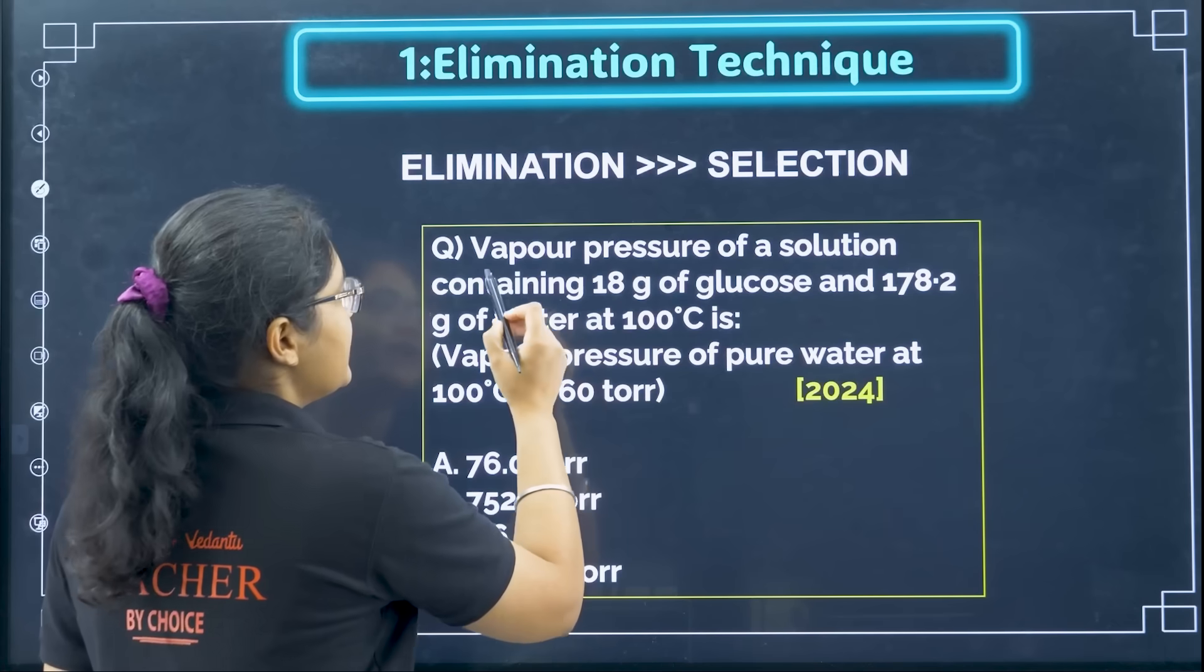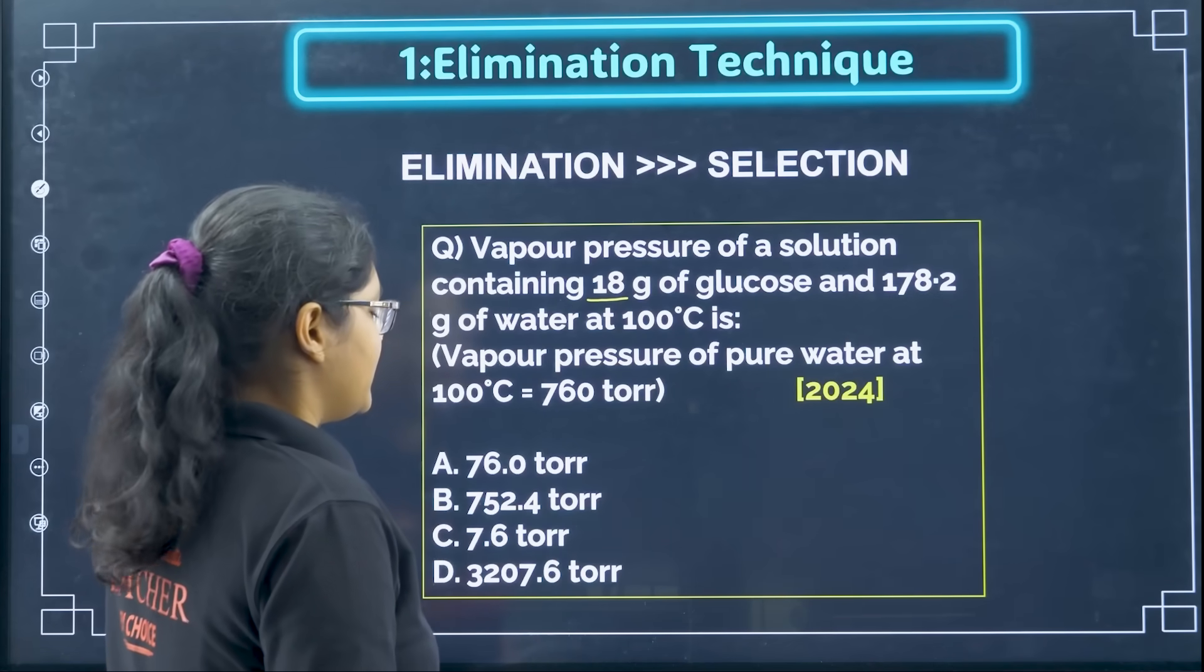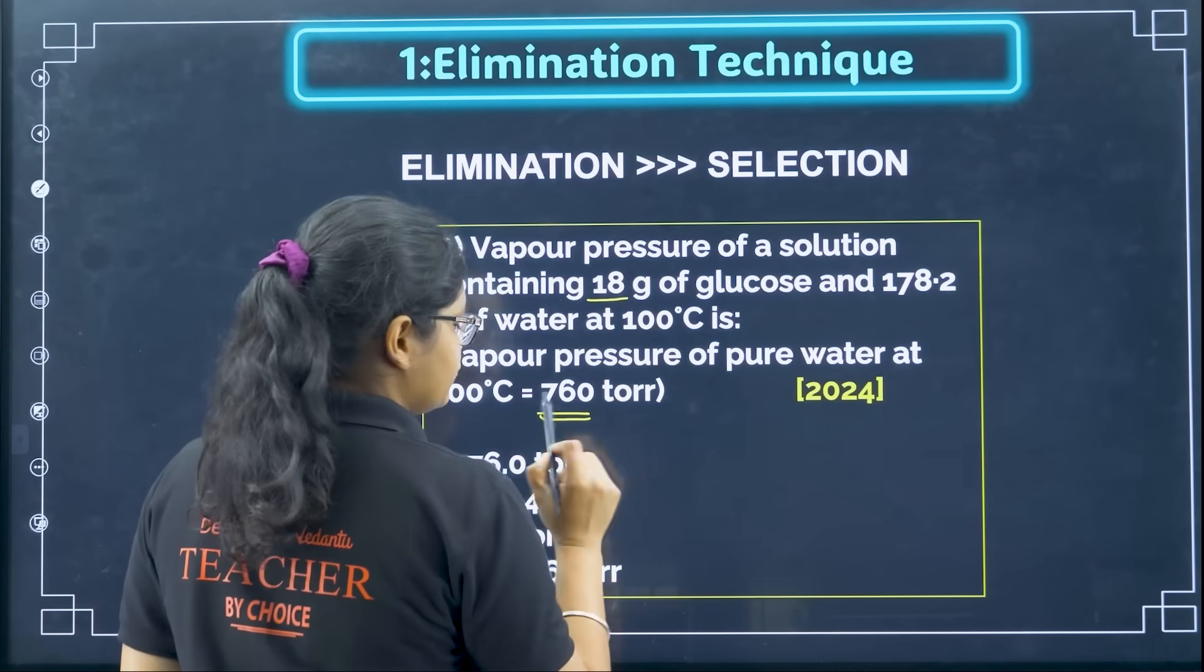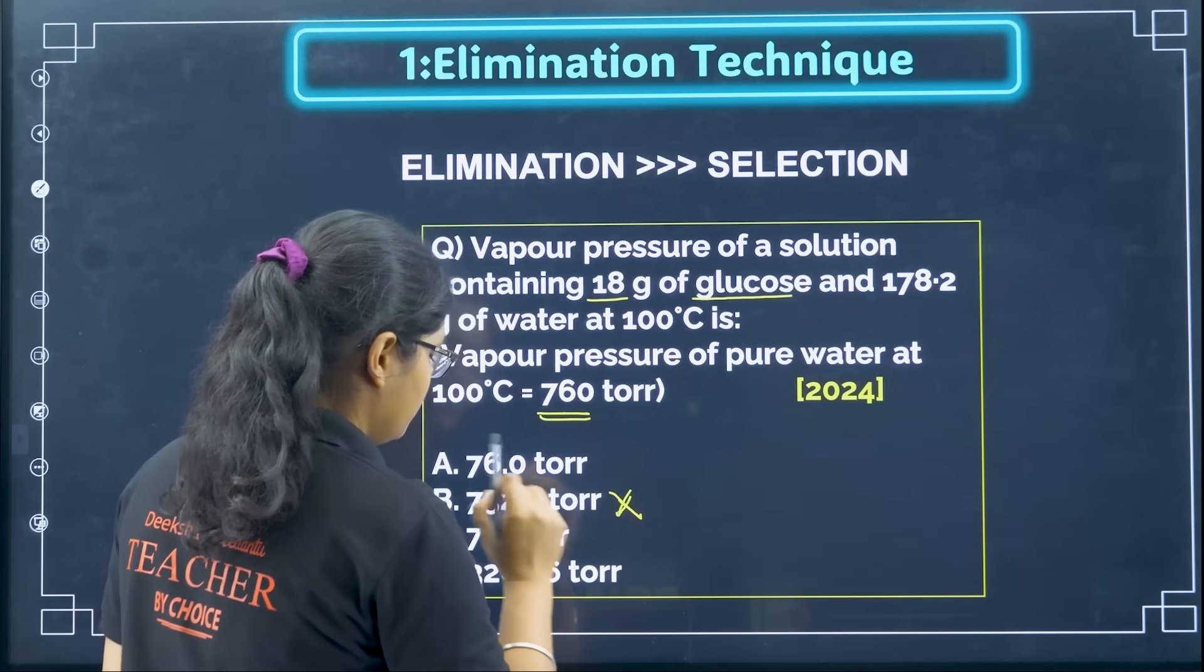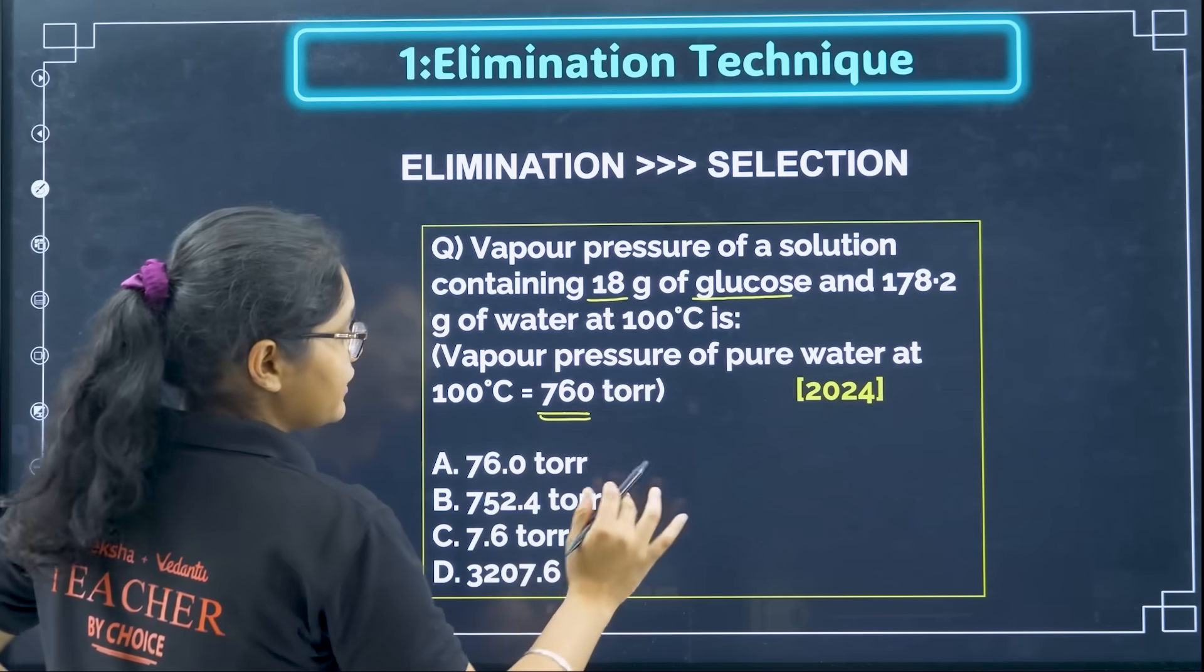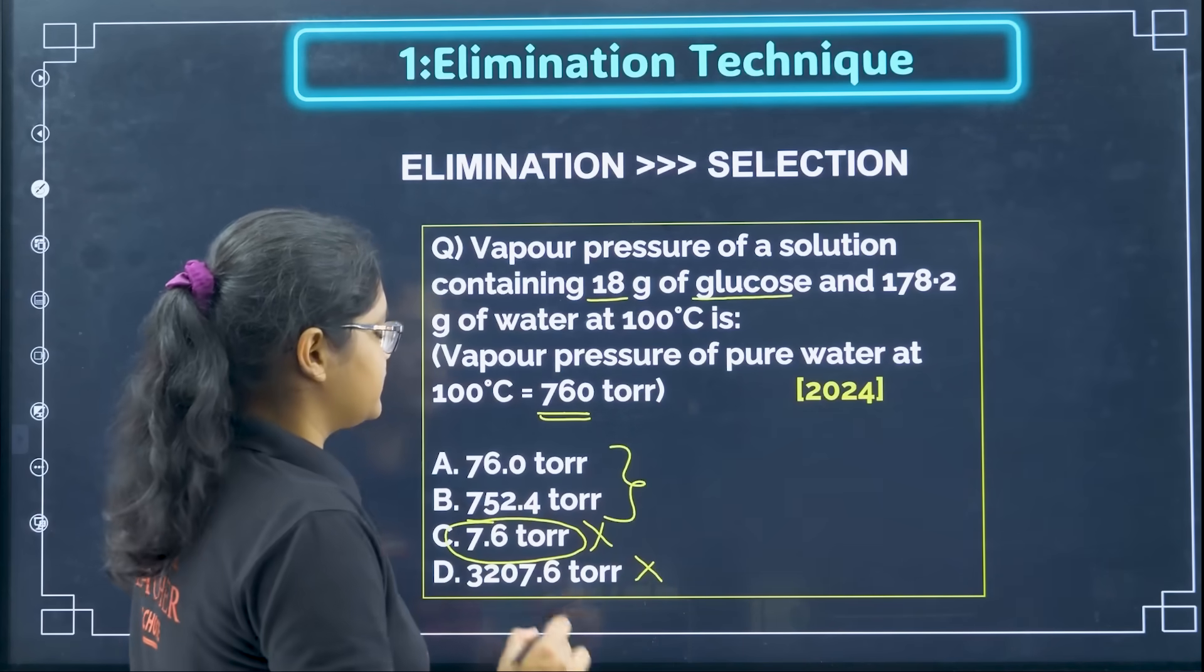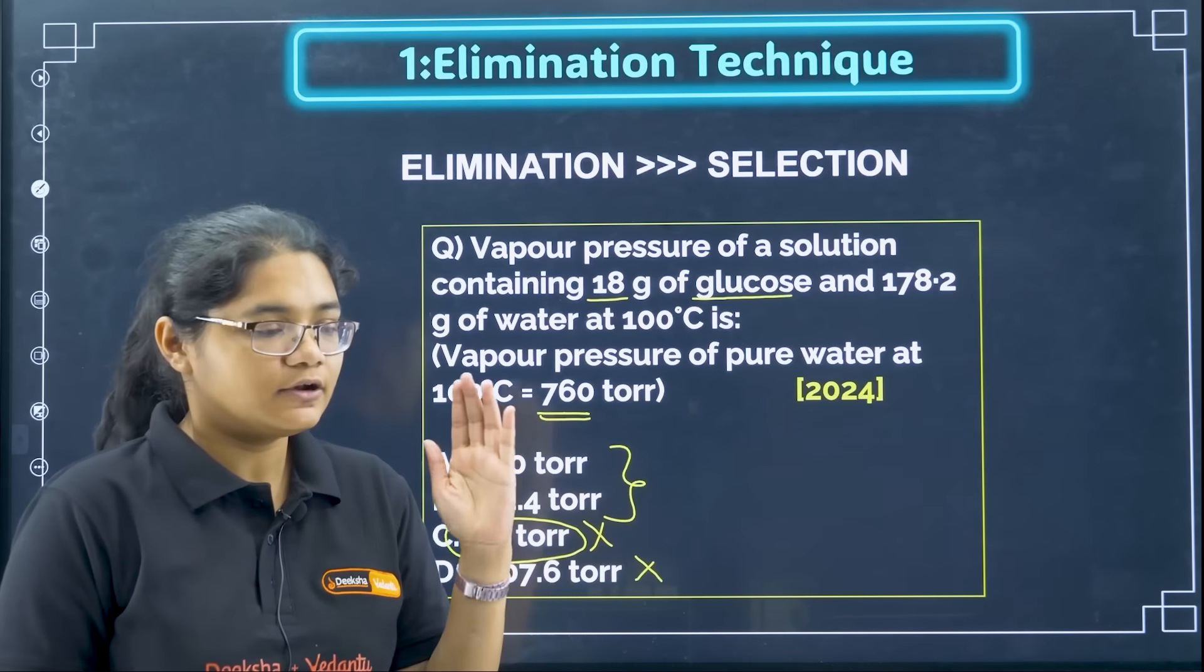I will take an example here. Vapor pressure of a solution containing 18 gram of glucose and 178.2 gram of water at 100 degree Celsius is. So I know that whenever I add a solute the vapor pressure always decreases. So the vapor pressure of water is 760 torr. So when I add a solute of glucose to this the vapor pressure will decrease. So the answer cannot be 752 and it does not increase to such a great extent. Sorry, the vapor pressure will always decrease. So it cannot be this option and I can also make that it won't decrease to such a small extent that from 762 it will become 7.6. So I can eliminate these two options. Now I can see I will do the calculation and there will be one correct answer out of these two. So this is what elimination means where you can eliminate the options smartly without doing anything, try to eliminate the options.